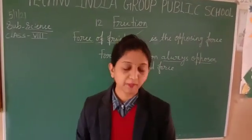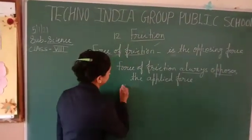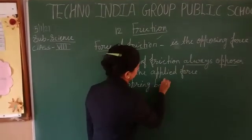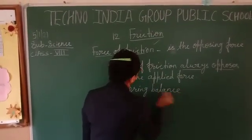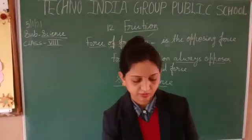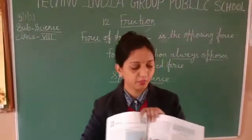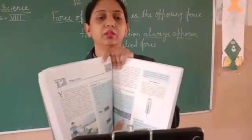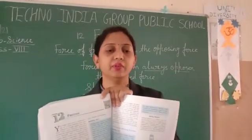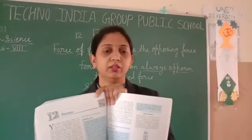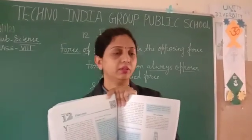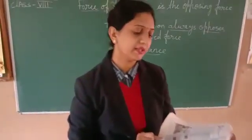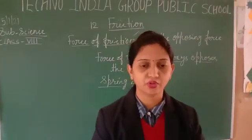Next point is the spring balance. The diagram of the spring balance is given in the book on page number 146 of your science book, in chapter number 12, Friction. Spring balance is the device used for measuring the force acting.